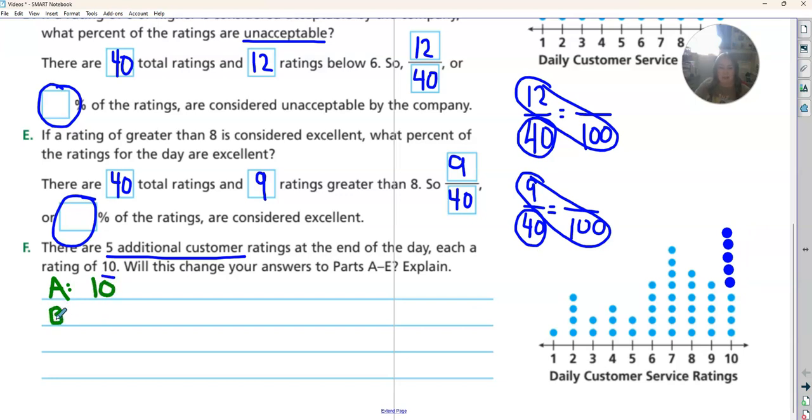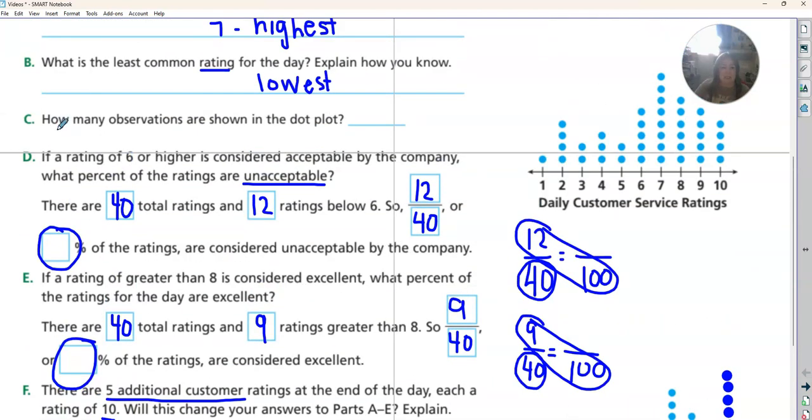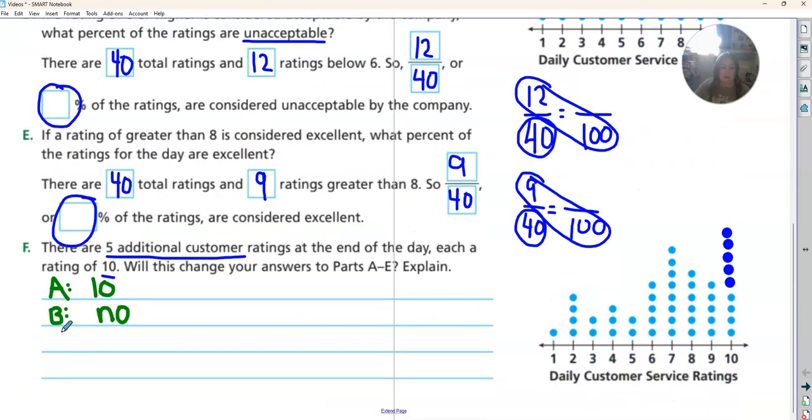Now, did that change B as the least common? That did not change the least common, so no change there, still the same. Now C wanted to know how many observations are there. Well, now how many observations are there? We had 40 before, we just got more. Now we have 45.